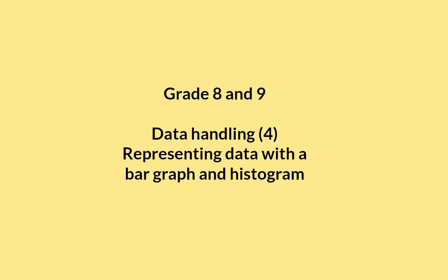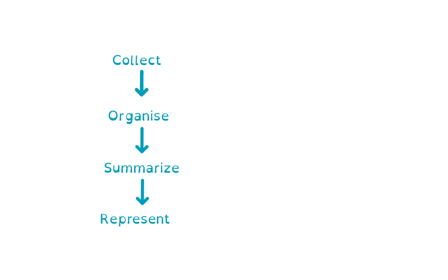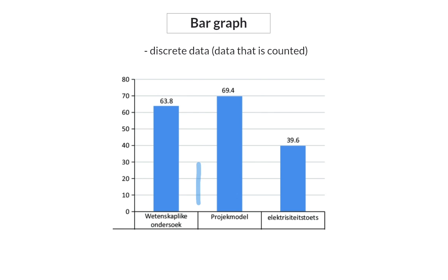In this video, we're going to have a look at how to represent data with a bar graph and histogram. After data has been collected, organized, and summarized, it can be represented using different graphs. The type of graph you'll use is determined by the type of data you are working with and what you want to represent. A bar graph is used when you want to represent discrete data, meaning data that is counted. Such a bar graph always has spaces in between the different bars.